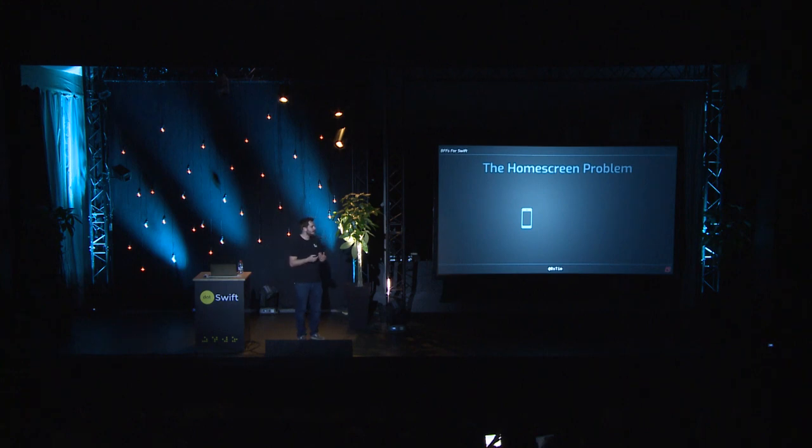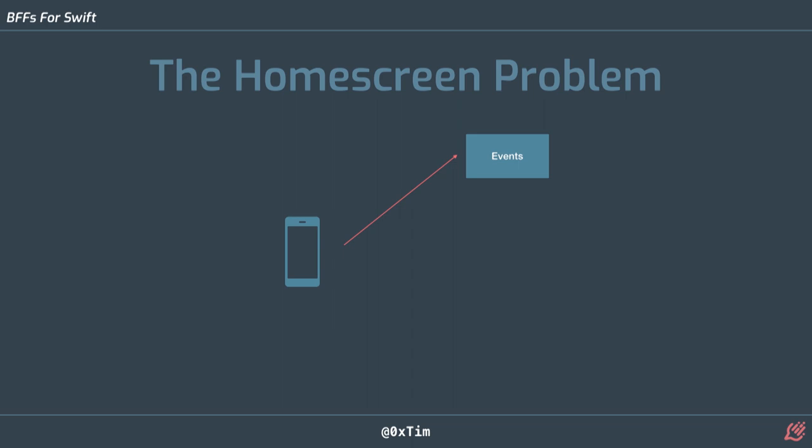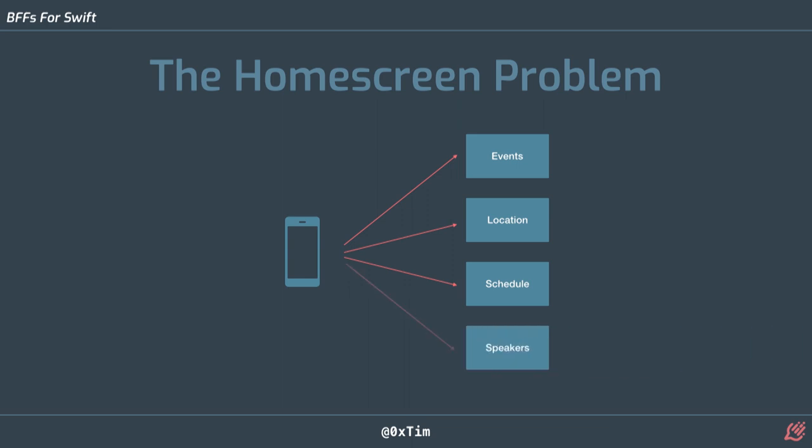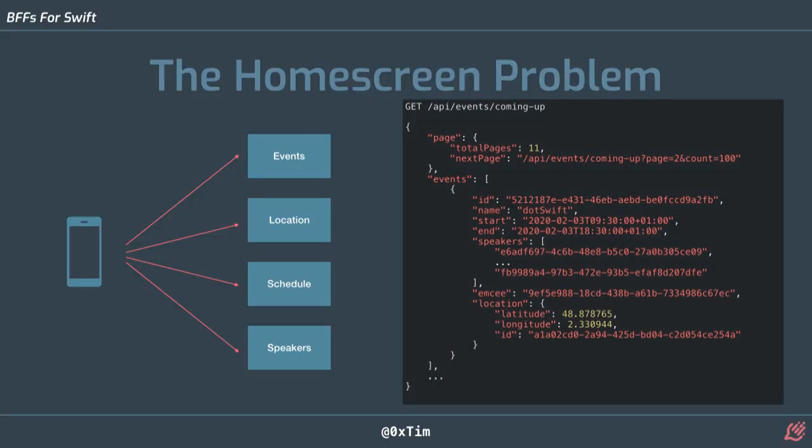Even if you've solved all of that, we have something I call the home screen problem — the thing I see most when talking to companies. Most APIs will be some sort of REST API. If we're writing a conference app to find all the conferences around us and what's on next, we'll have an events endpoint, an endpoint for locations, one for the schedule, and one for speakers. So let's imagine our conference app: on the home screen, we're going to display the conferences coming up with a picture, where it is, and either the talk currently on or coming up next.